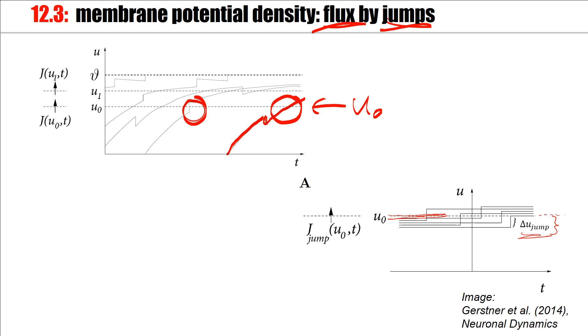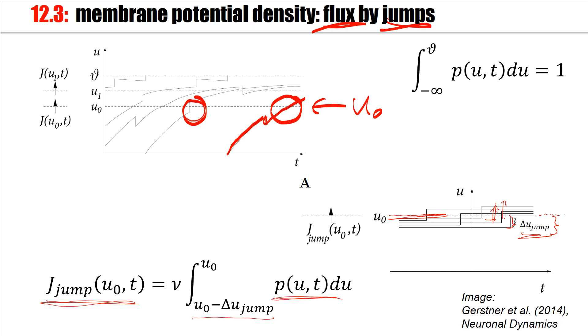Now let's look at this reference potential U0. All trajectories that are within this delta U jump below U0 will be kicked across. So this is kicked across, another trajectory here would be kicked across, this trajectory would be kicked across, and so forth. Therefore, this flux caused by jumps is the total density in the region below U0. U0 is an arbitrary reference potential delta jump below. Delta U jump is the size of the jump effect of an excitatory spike, and we integrate up to U0.